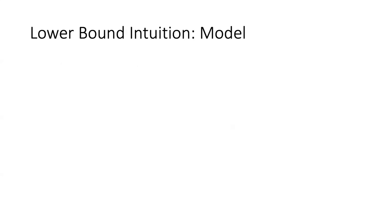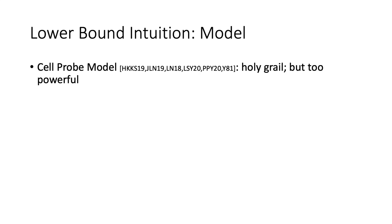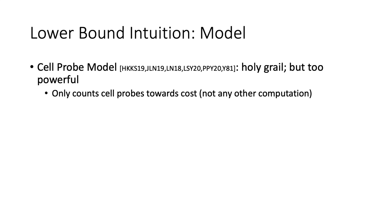Before presenting the model, I want to mention that the cell probe model is considered the holy grail for private data structure lower bounds. But in this case it turned out to be too powerful. The cell probe model only counts cell probes towards the cost of the protocol, not any other computation — just how many server cells you touch. On the other hand, it still requires any adversary attacking the protocol to be PPT.